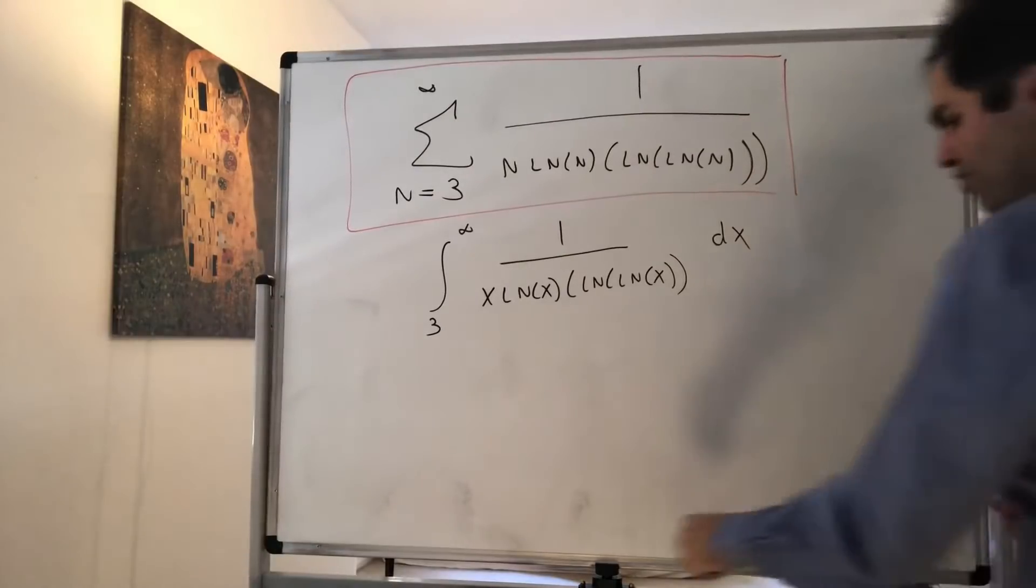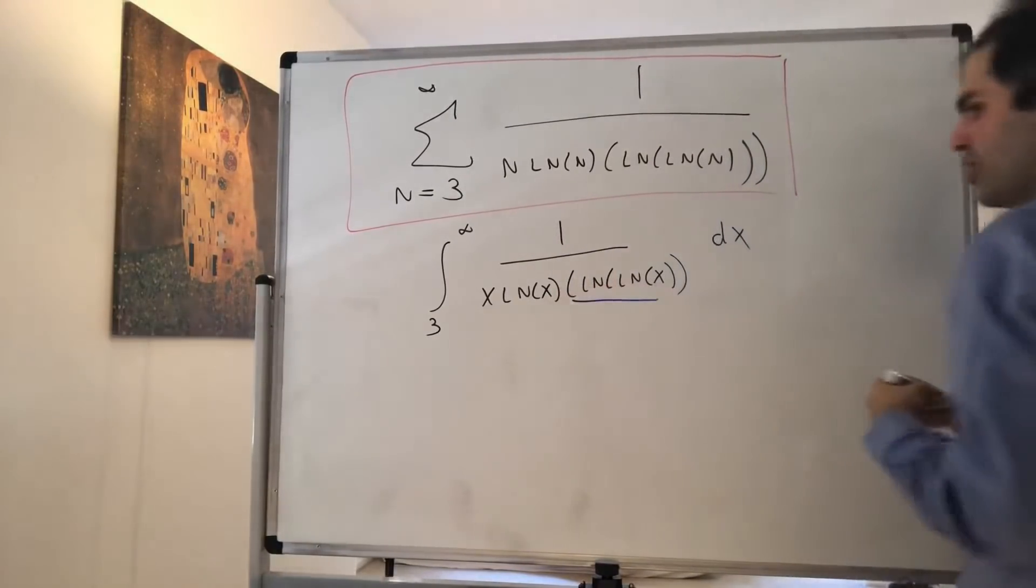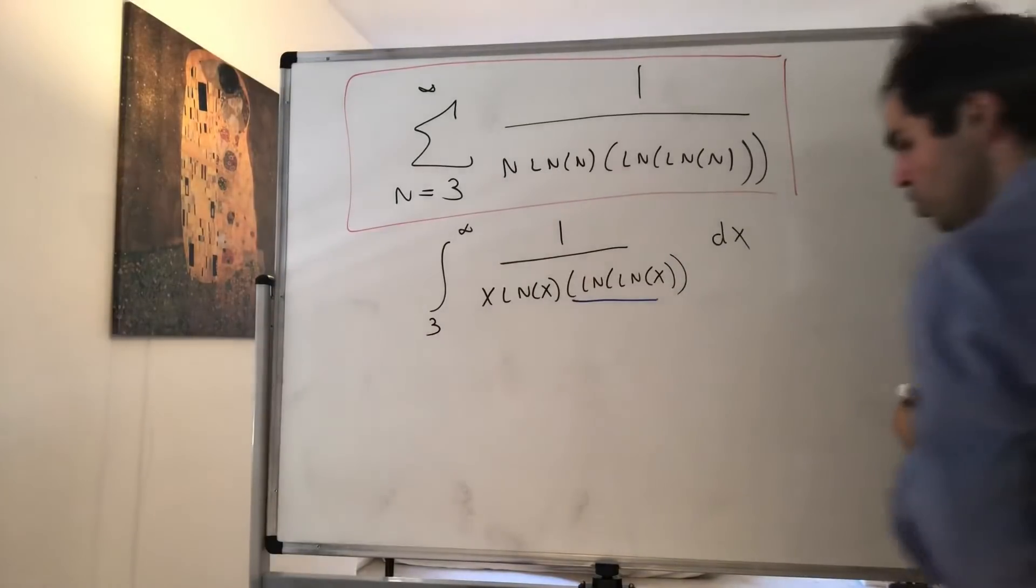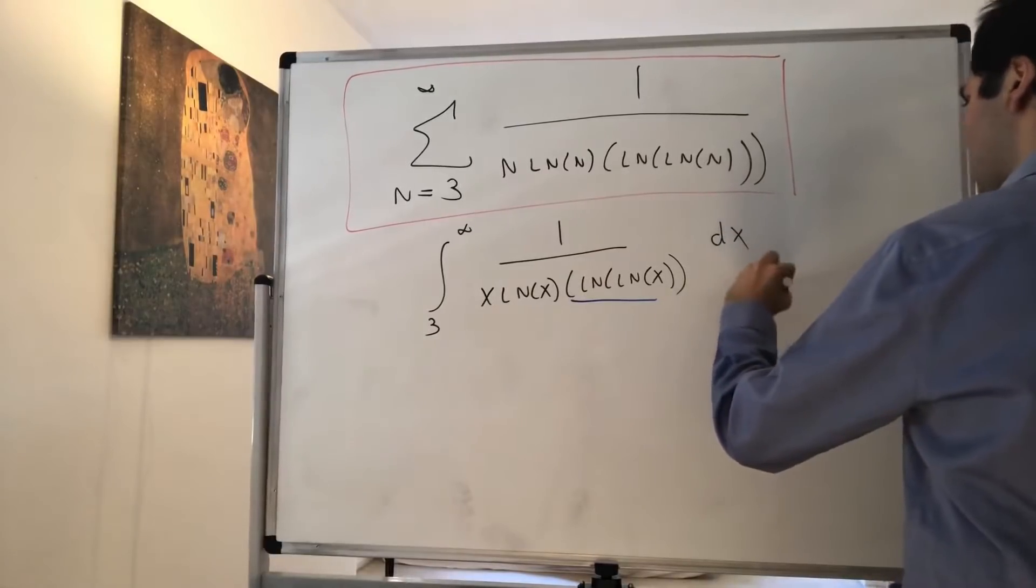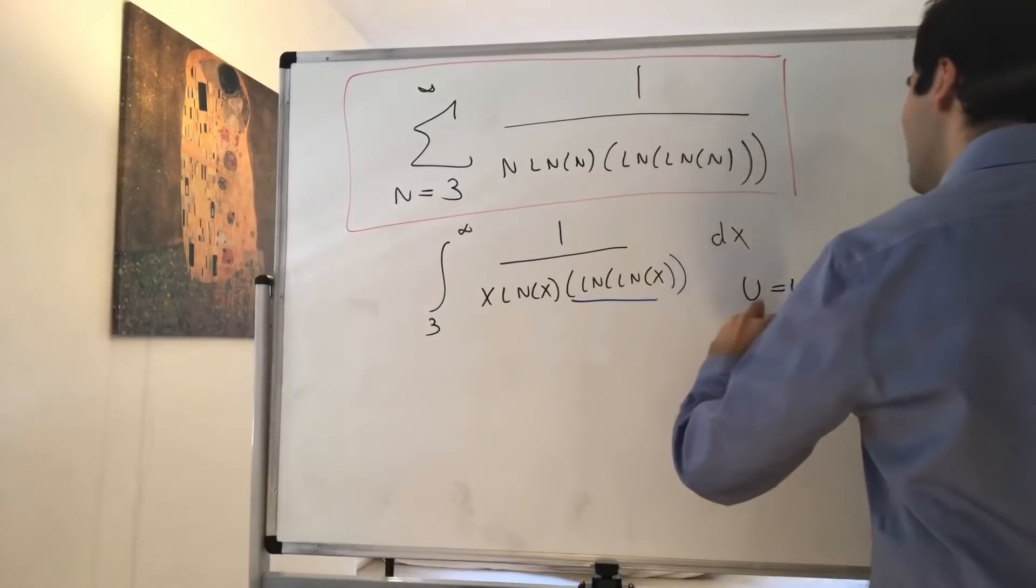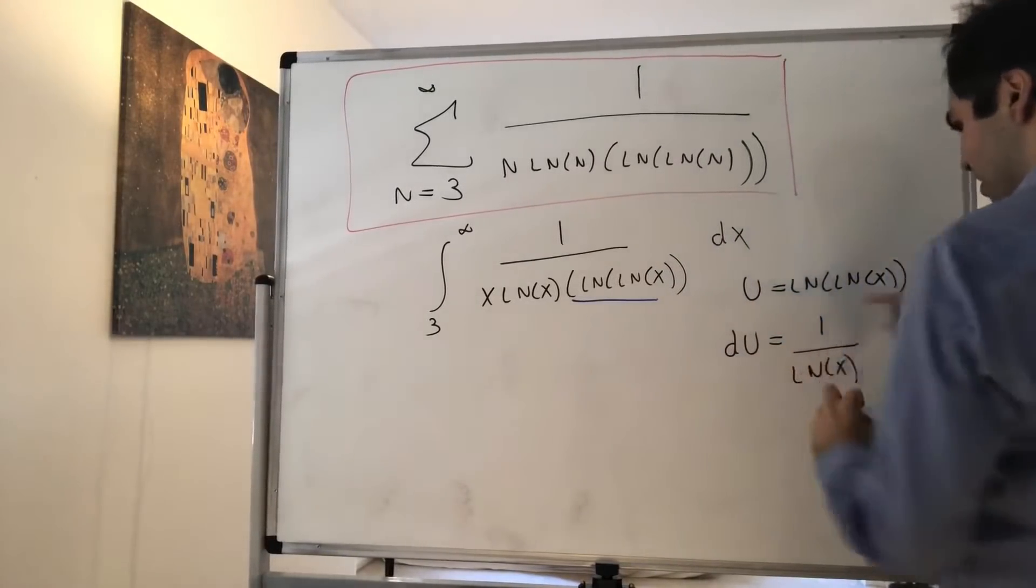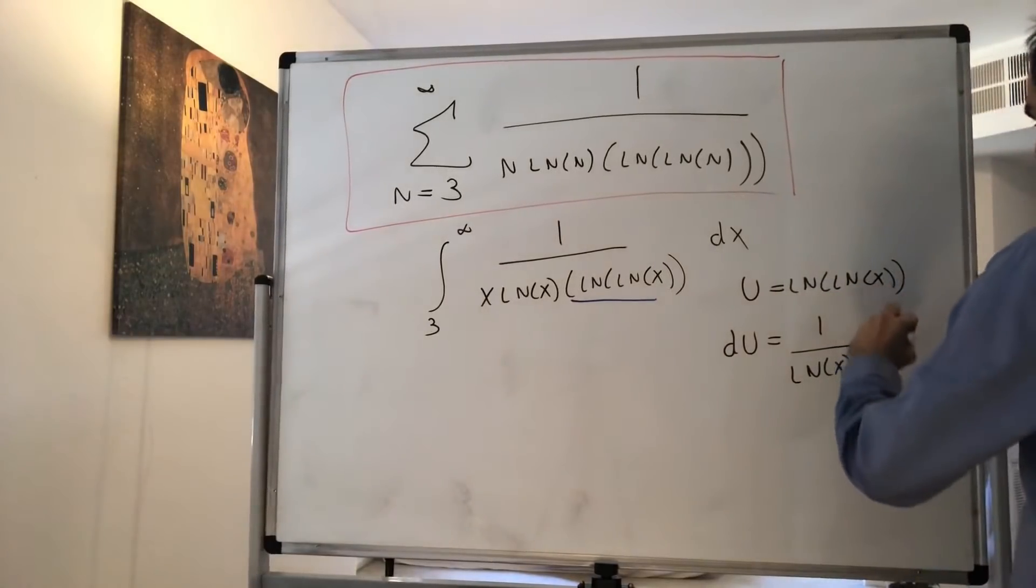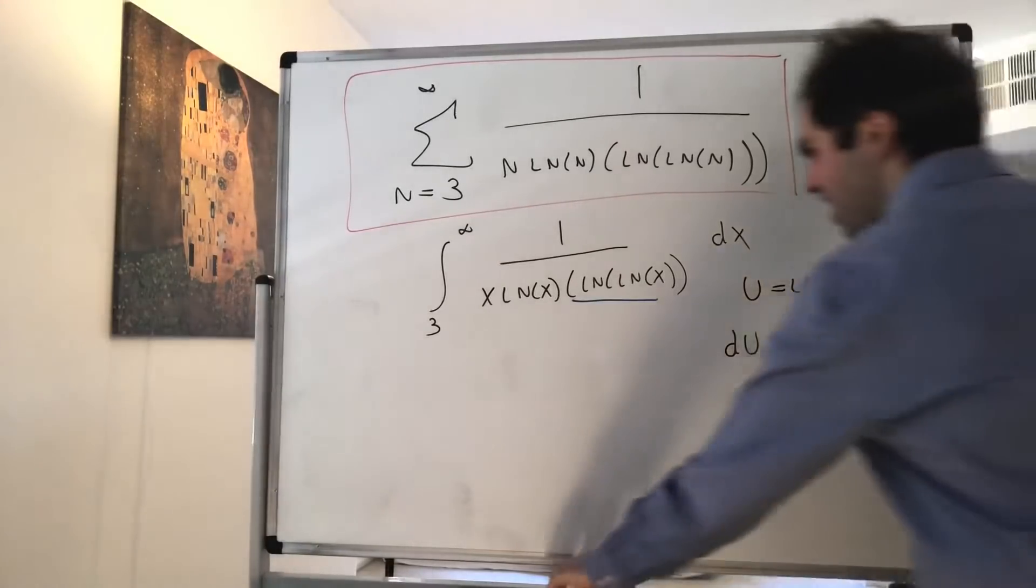And the beautiful thing is, you might guess u substitution, and you're right, because let u be ln of ln of x. Then, using the chain rule, we get du equals 1 over ln of x, this derivative, times this derivative, times 1 over x, which is precisely here.